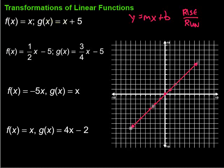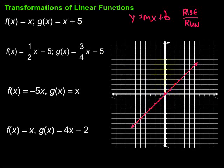Now I want to graph g of x. I start at the y-intercept, which in this case is 5. So I go up to 5 on the y-axis for the first point. The slope is the same — still 1. So I go up 1 over 1, up 1 over 1, and also down 1 over 1 to get points in both directions.